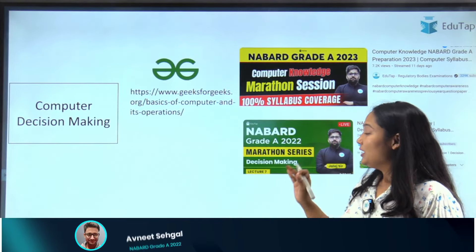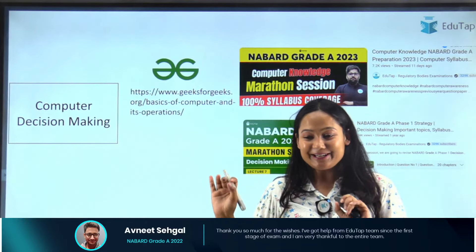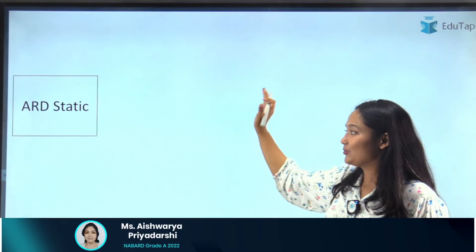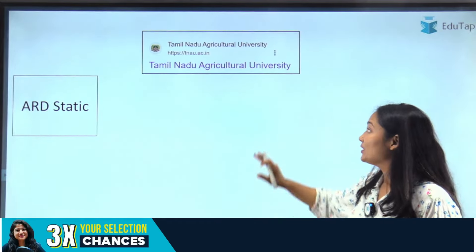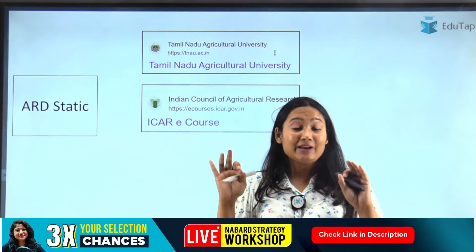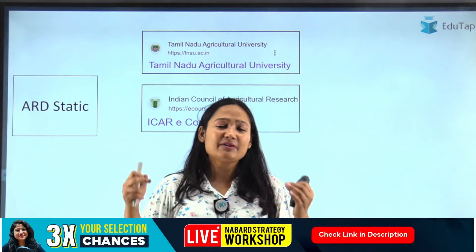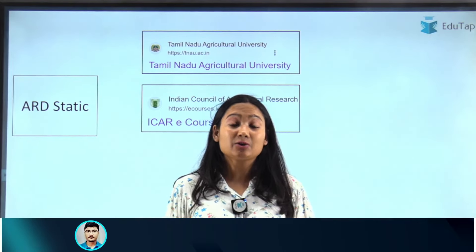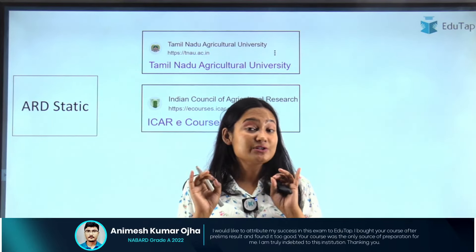Now all the non-merit sections are covered. Let's address the elephant in the room — the merit section. First, let's talk about ARD Static. For ARD Static, the two online sources I recommend are TNAU and the ICAR e-course. Both of these websites are not easy to navigate — they are not made specifically for NABARD candidates, so you will have to be very selective about what you extract from them.